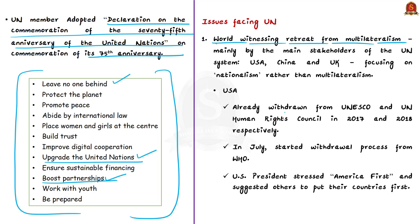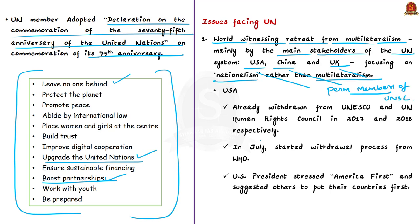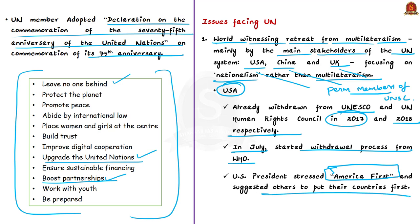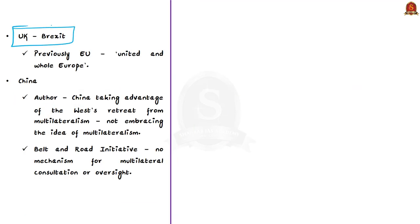According to the author, the challenge to multilateralism is posed by main stakeholders of the UN system — USA, China, and UK, the P5 permanent members of the UN Security Council — who are now focusing on nationalism. USA has withdrawn from UNESCO in 2017, the UN Human Rights Council in 2018, and began withdrawal from the WHO in July 2020. In the virtual meeting, the US President stressed 'America First' and suggested others put their countries first. UK has undergone Brexit, exiting the European Union, showing that nationalism remains strong in Europe. China is taking advantage of the West's retreat from multilateralism while not embracing multilateralism itself, seeking to endorse its Belt and Road Initiative through bilateral credit agreements with no mechanism for multilateral consultations or oversight.